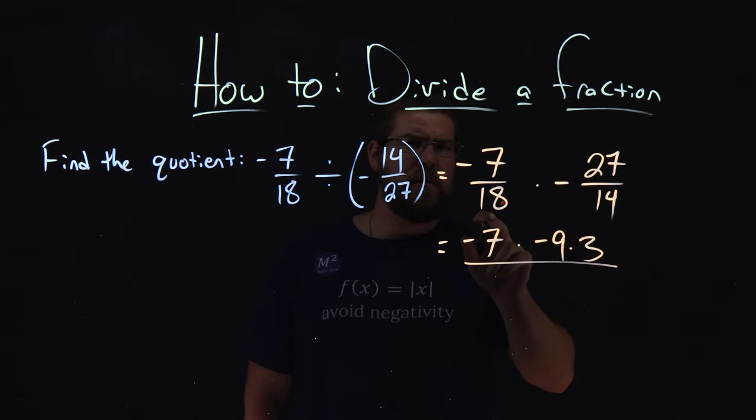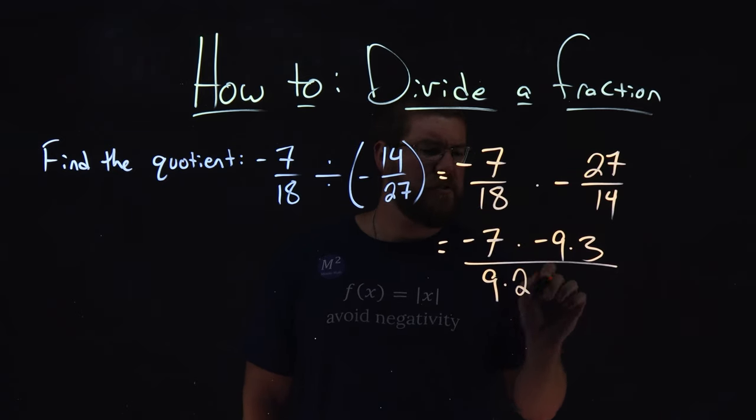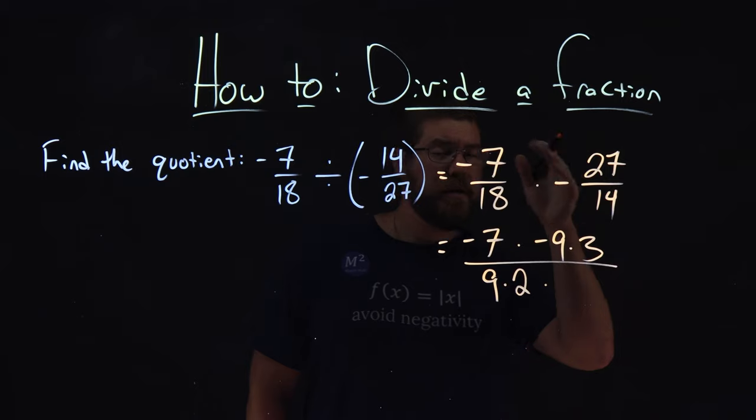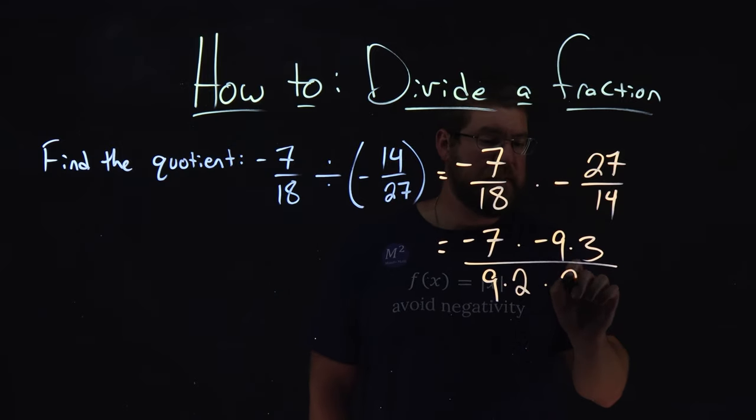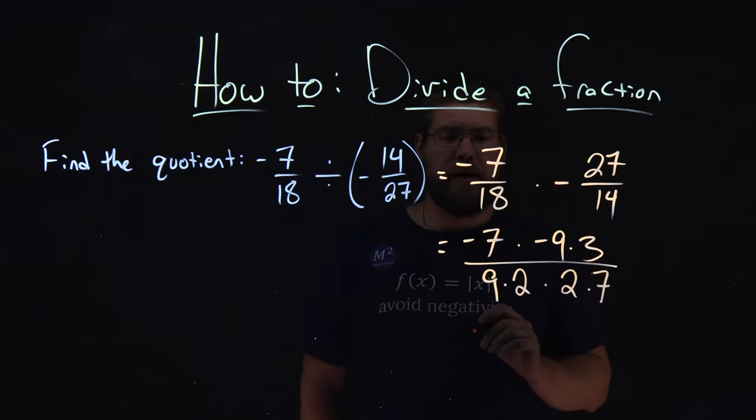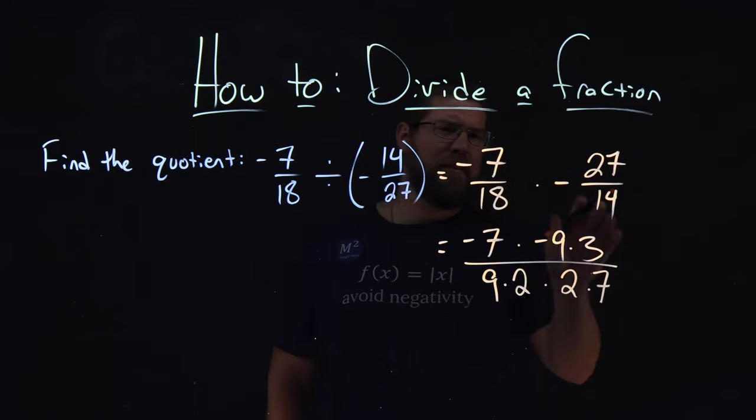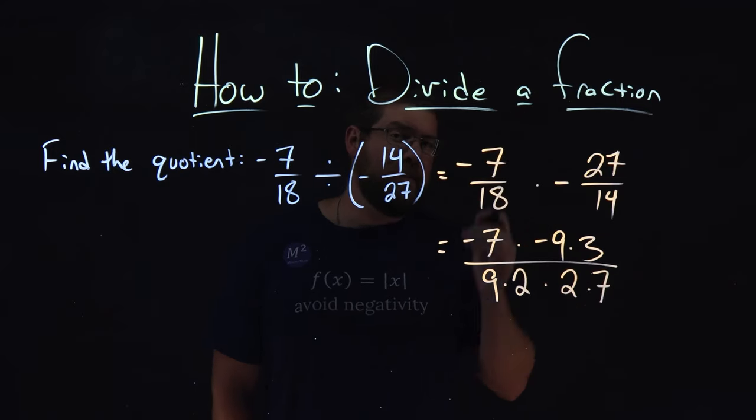Denominator, 18, well, we already have a 9 in the numerator, so that's 9 and 2. Let's go with that. 9 times 2 down here times 14 is 2 and 7 being multiplied. And I try to find numbers if I see them that are opposite in the numerator.